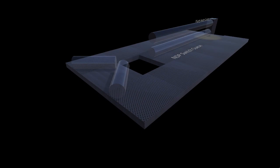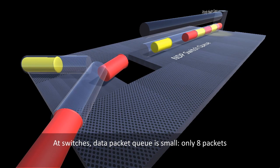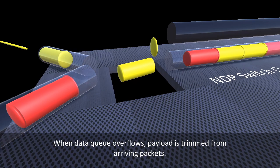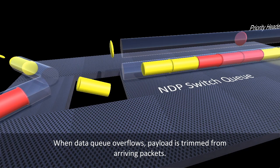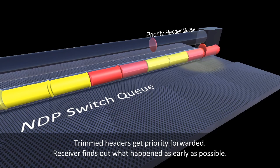So here's an NDP switch. To keep latency low we run really short queues. Eight data packets is enough. When the data queue overflows, we trim off the payload. We don't just forward the header though, we put it in a priority queue. This allows the receiver to find out as soon as possible that the packet didn't make it.